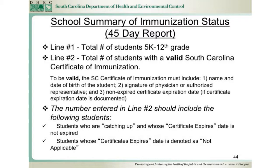In the next section of the form, you should enter the total number of students enrolled in grades 5K through 12 in your school that fall into each noted category. On line number 1, enter the total number of 5K through 12th grade students enrolled in your school.